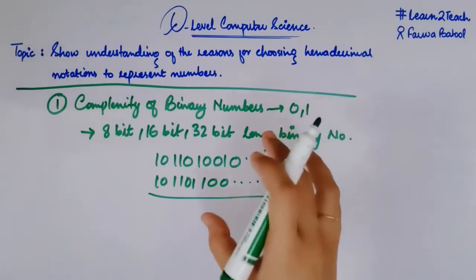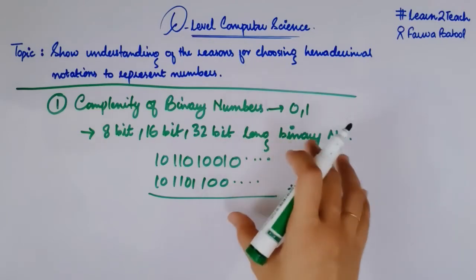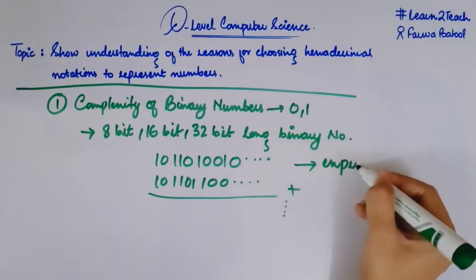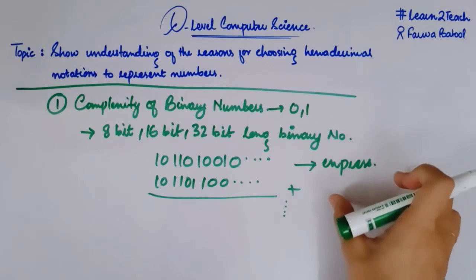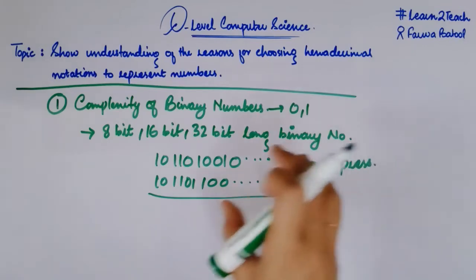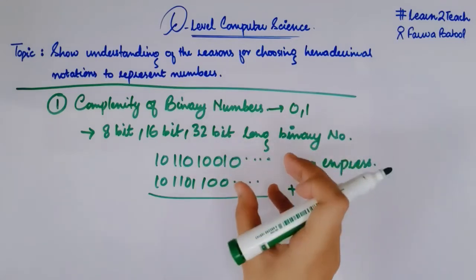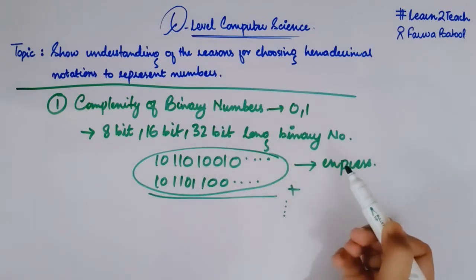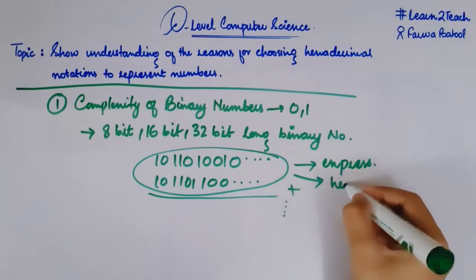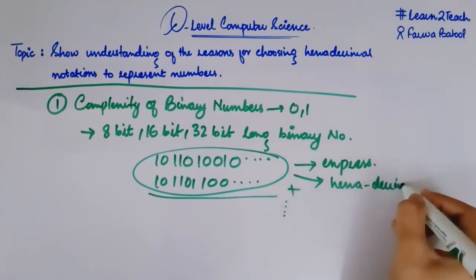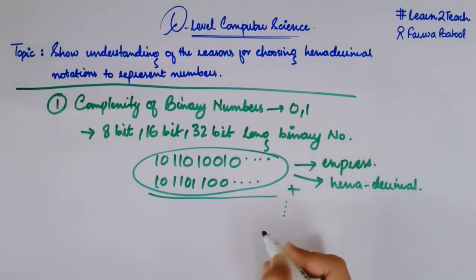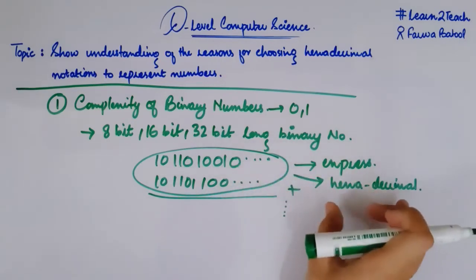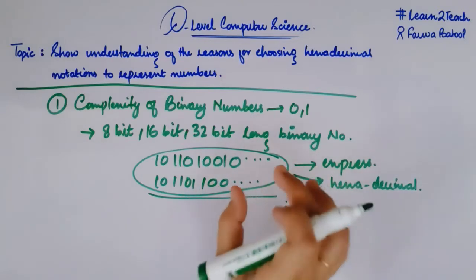So in order to solve this problem, or to express these numbers in an easier manner so that it can become easy for a user or an operator to deal with computer data, we can convert this binary data into another form — into a hexadecimal notation. And remember, this hexadecimal notation is easier than binary numbers because it reduces the number of digits. Now let me tell you how this happens.